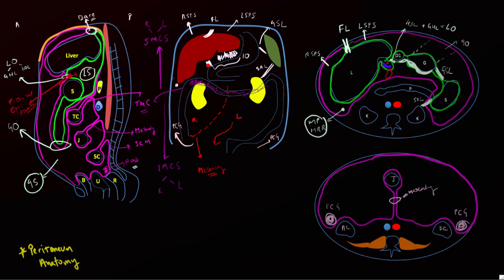The peritoneal spaces of the pelvis communicate laterally with the paracolic gutters on both sides. Superiorly, the right paracolic gutter leads to Morrison's pouch and the right subphrenic space, with an additional subhepatic space sometimes distinguished. On the left, the phrenicocolic ligament — running from the splenic flexure of the colon to the diaphragm — forms a partial barrier limiting fluid passage to the left subphrenic space. Finally, the greater omentum hangs from the stomach like an apron, draping into the anterior abdominal cavity.